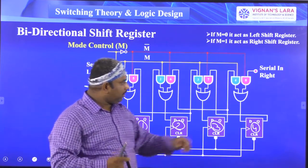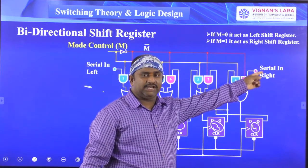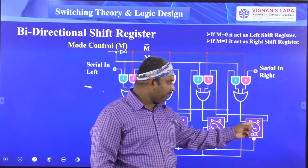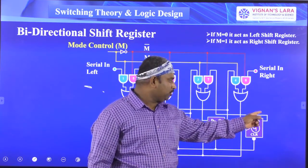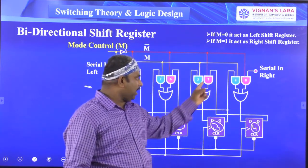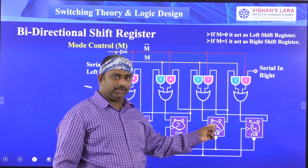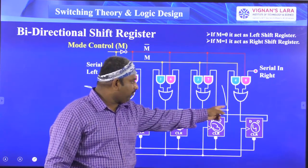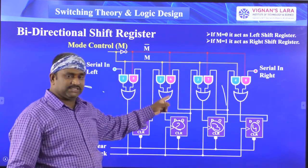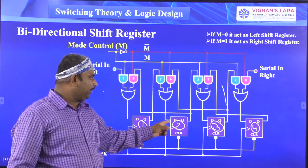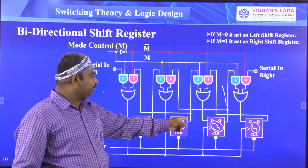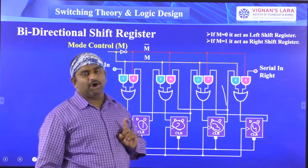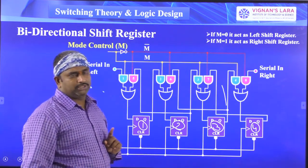Coming to the right-shift configuration, when giving serial data from the right side into the fourth flip-flop, the output of the fourth flip-flop is connected to the third flip-flop input, the third flip-flop output is connected to the second flip-flop input, and the second flip-flop output is connected to the first flip-flop input. This is the configuration to concentrate on.